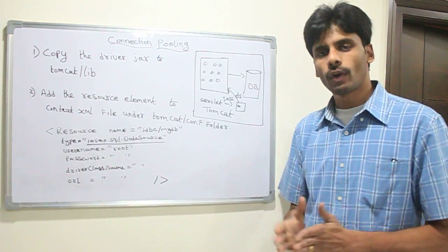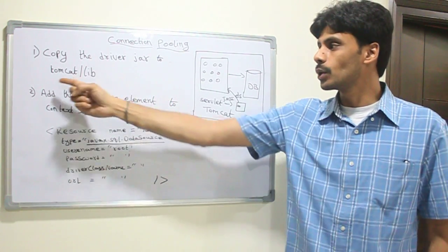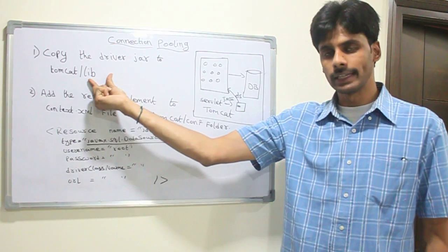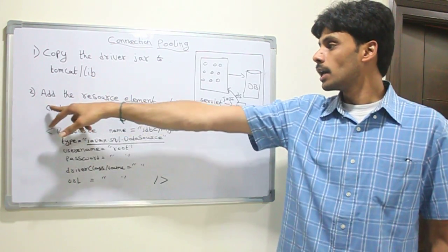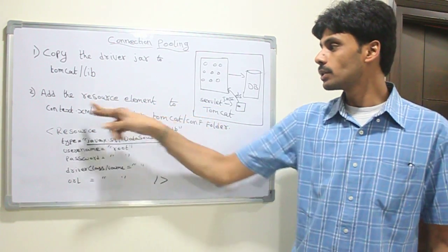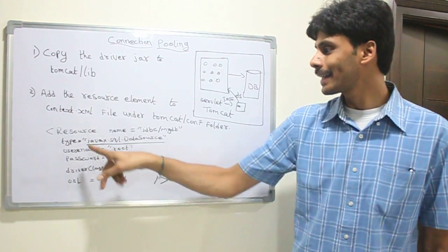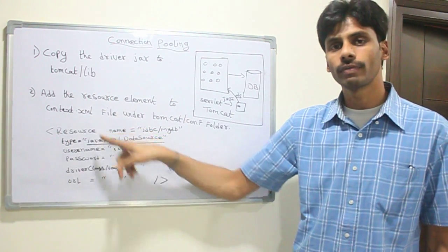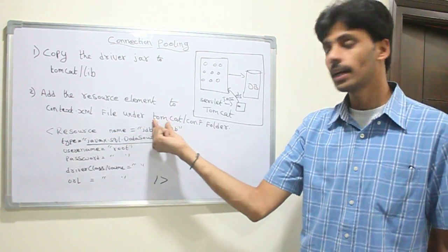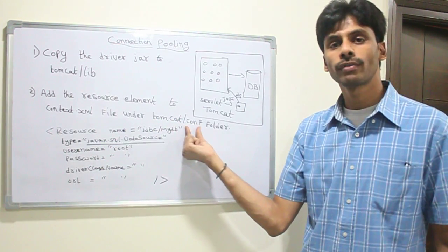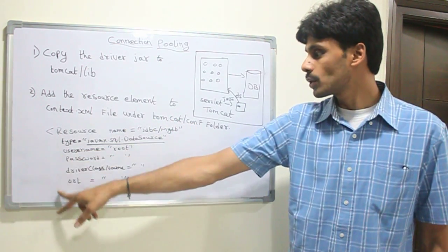If it is Oracle, it is OJDBC 6 or 14.jar. You copy that jar into the Tomcat's lib folder. That is the first step and then you add the resource element which is an important element into the context.xml file of the Apache Tomcat which you can find under Tomcat's conf folder.